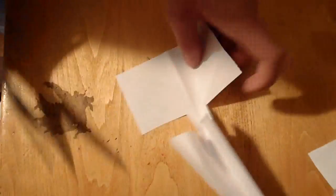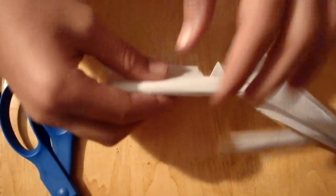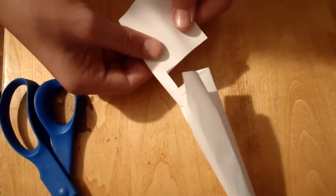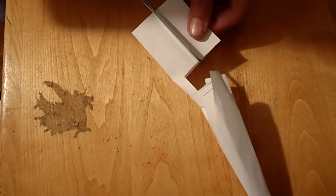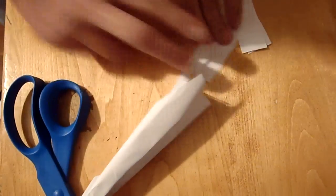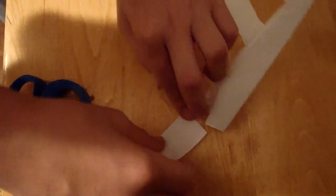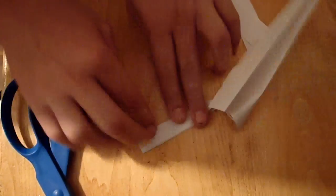Now you want to adjust this tail a little bit to make it a little bit shorter. Fold it down, and just like this.